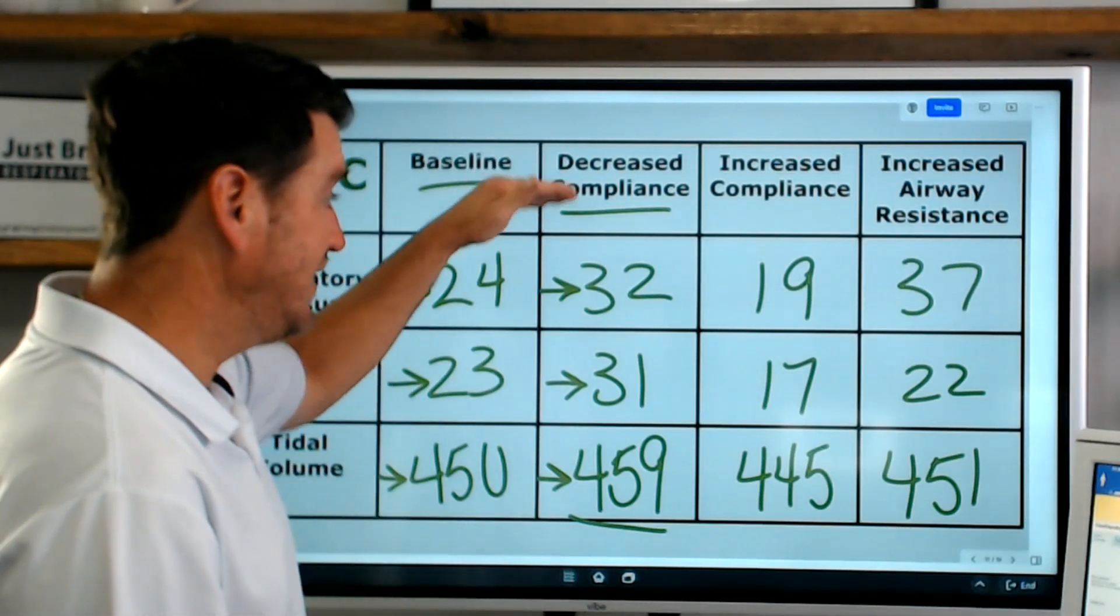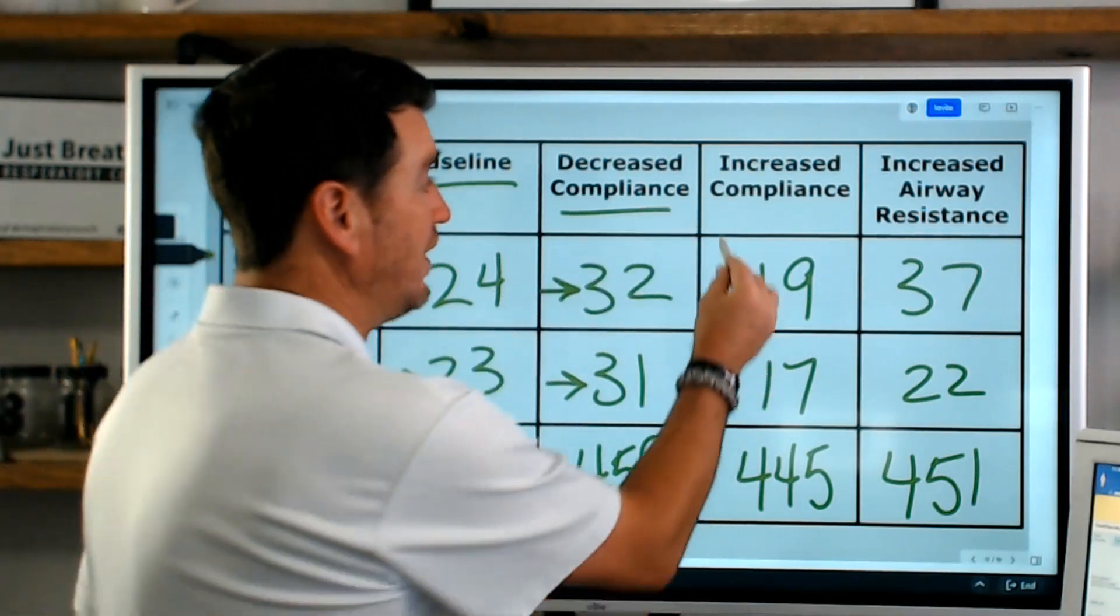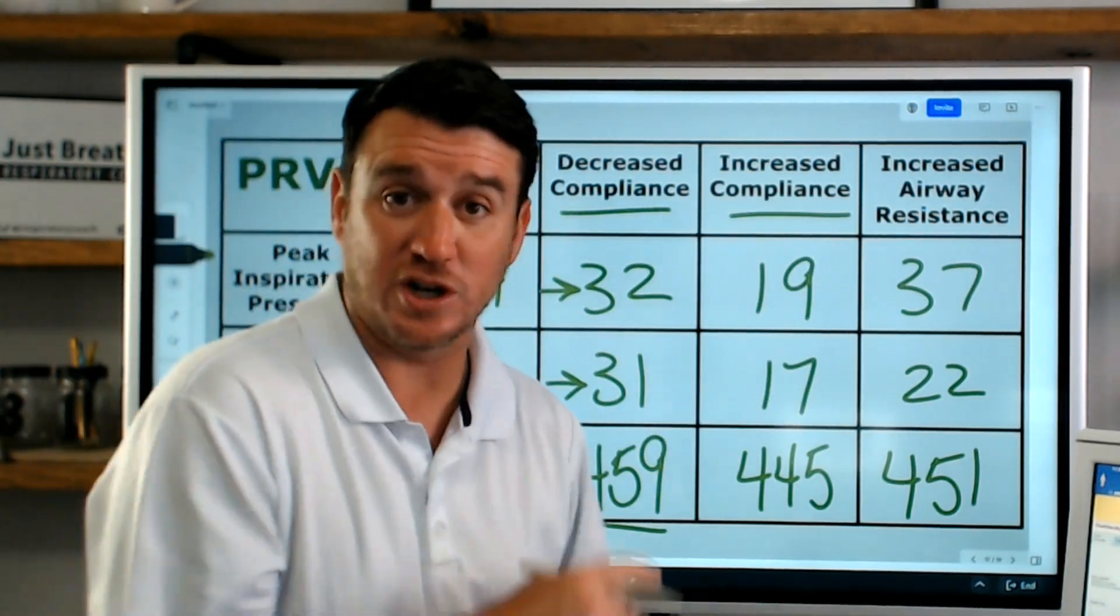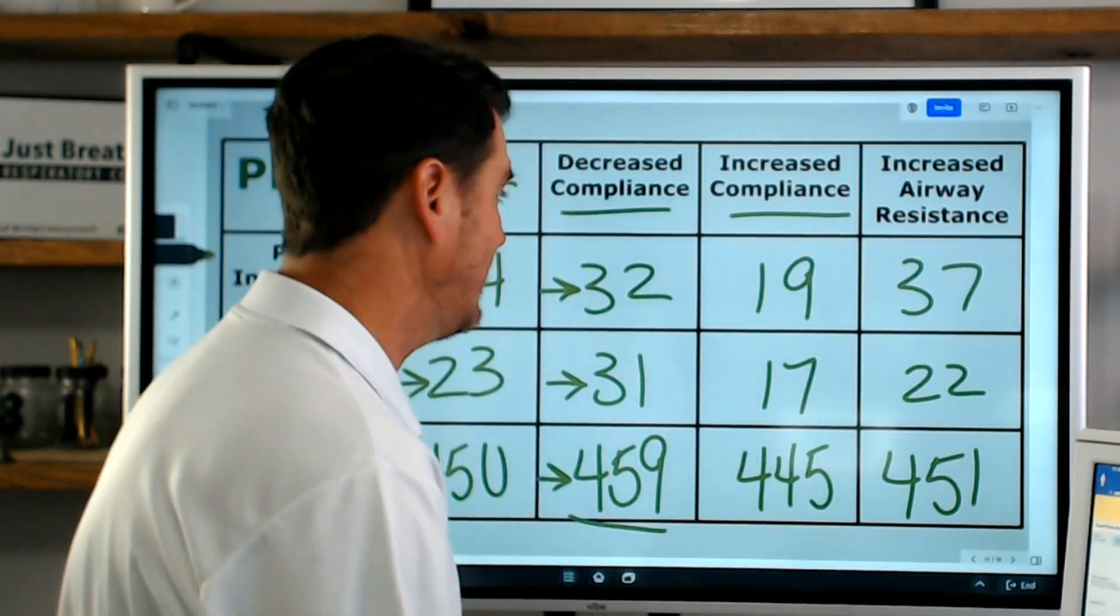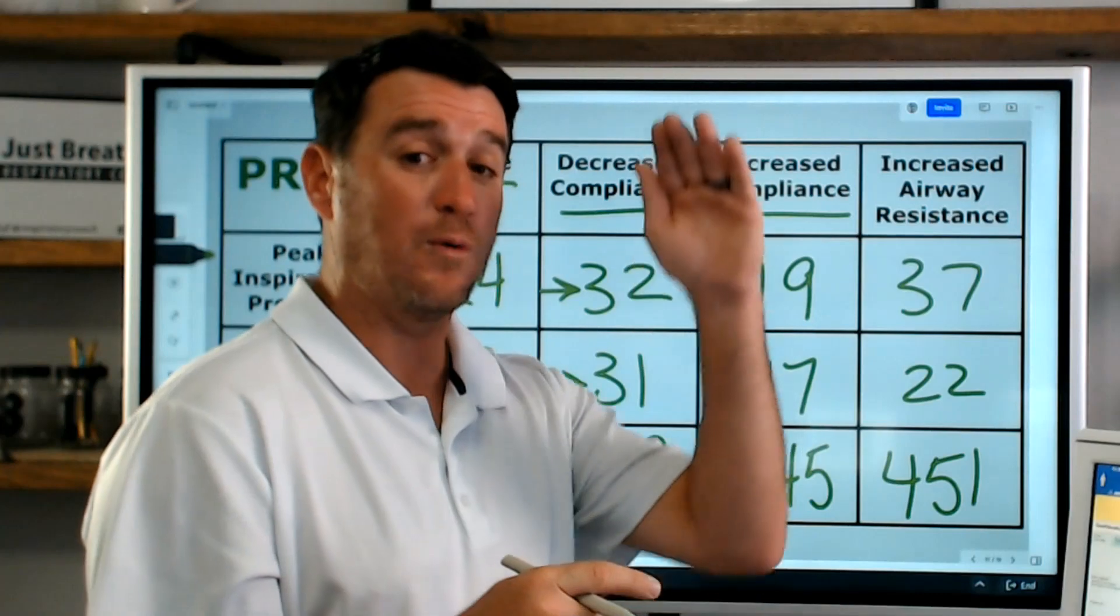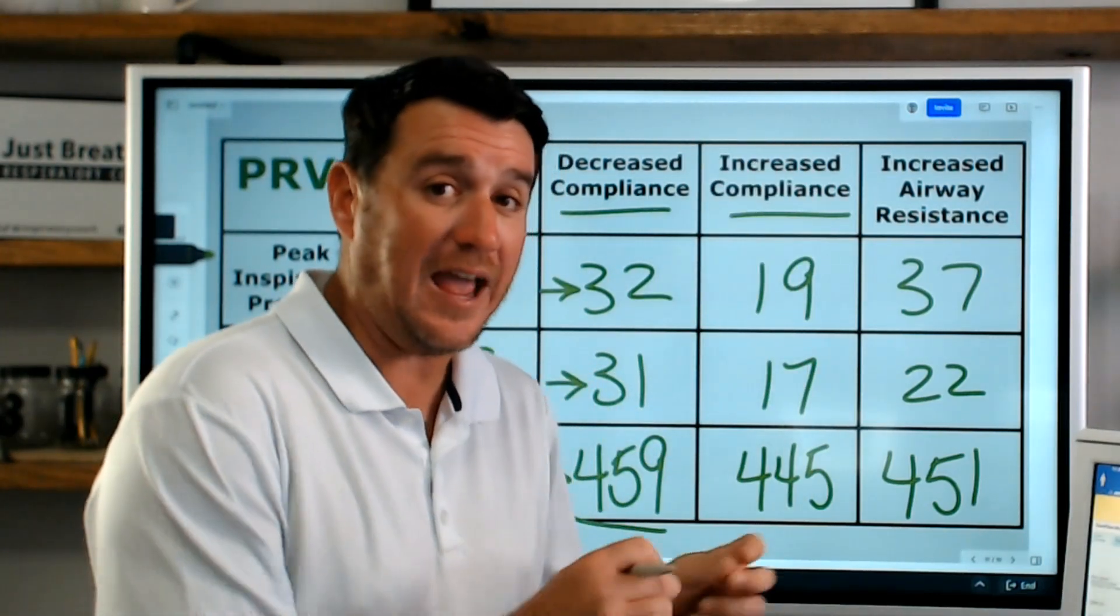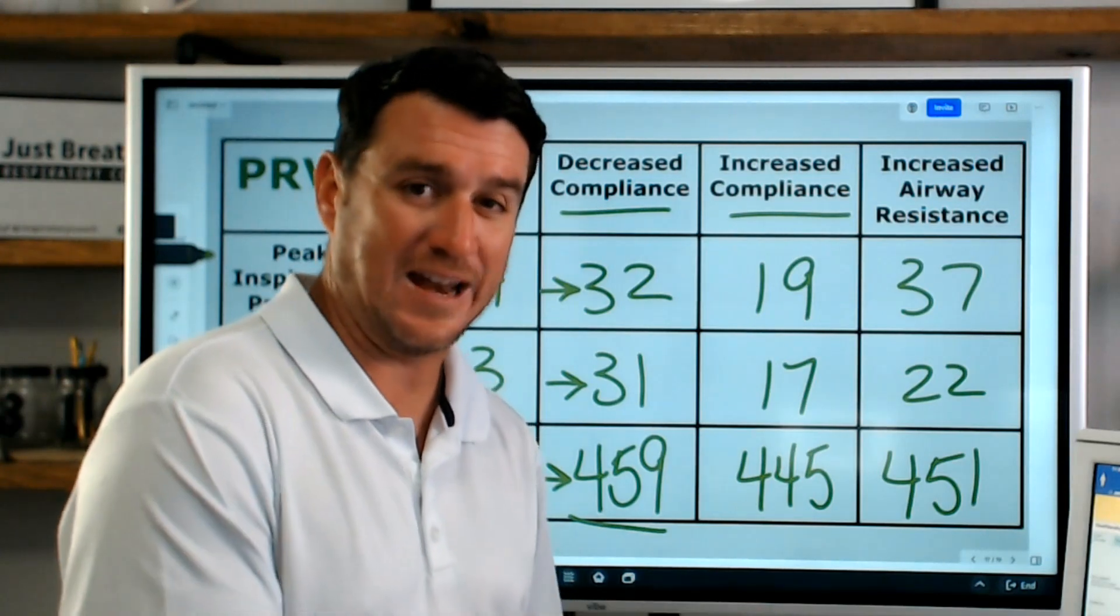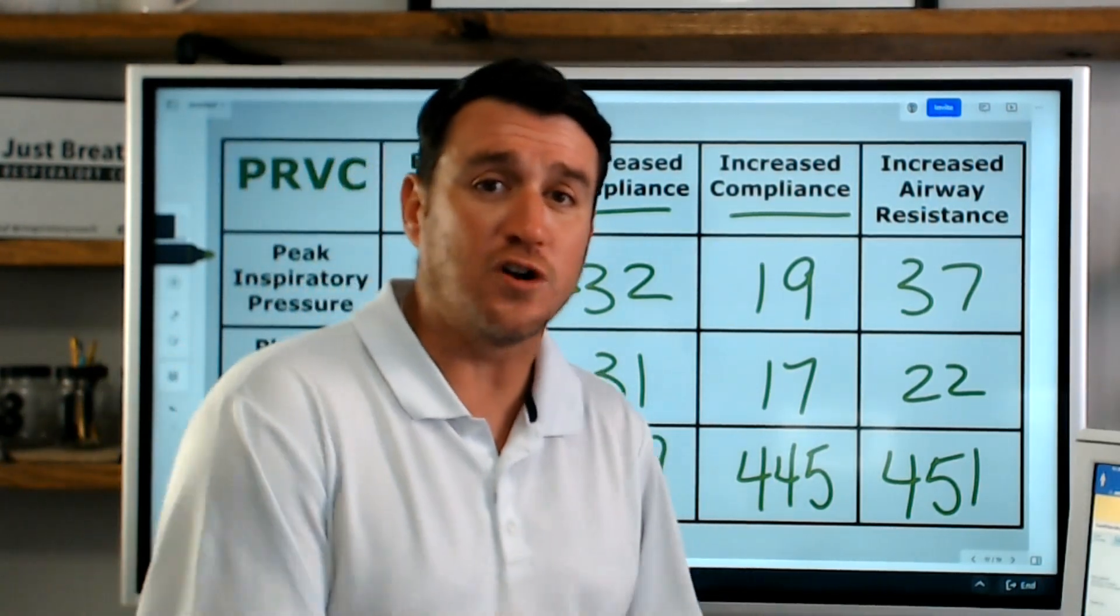That was with a decrease in compliance. Now what we noticed is that when we increased the compliance, we took off both rubber bands and we simulated an increase in compliance, look what happened. Initially, our tidal volumes went way up because we had improved compliance and we're in a pressure control mode of mechanical ventilation. Some people say, well, pressure regulated volume control, that's a volume control mode.